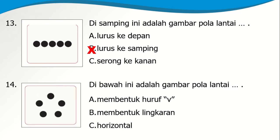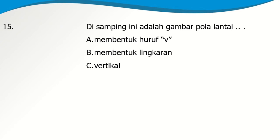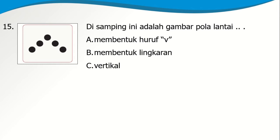Nomor 14: Di bawah ini adalah gambar pola lantai A. Membentuk huruf V, B. Membentuk lingkaran, atau C. Horizontal. Ya, ini adalah pola lantai yang membentuk lingkaran. Nomor 15: Di samping adalah gambar pola lantai A. Membentuk huruf V, B. Membentuk lingkaran, atau C. Vertikal. Ya, ini adalah pola lantai yang membentuk huruf V.